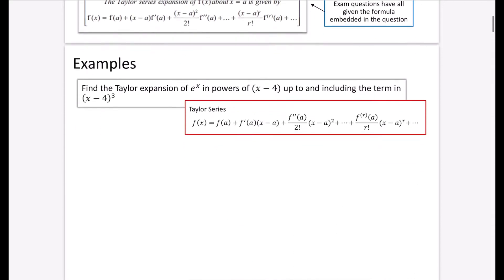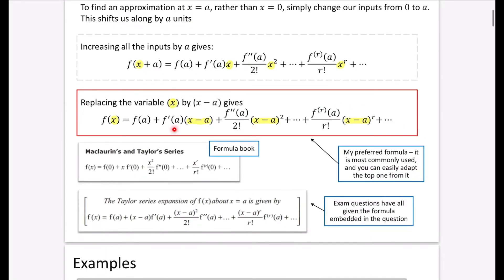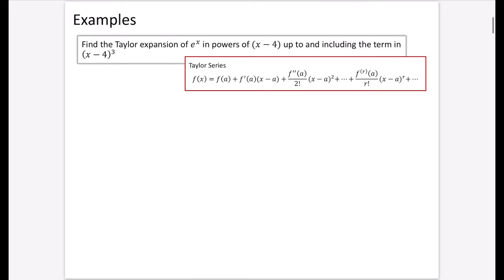Let's look at our first example, which produces the orange dotted graph from the first page. The question asks us to find the Taylor expansion of e to the x in powers of x minus four, up to and including the term in x minus four cubed. Because it says 'in powers of x minus four,' this uses the second formula. We differentiate repeatedly: f(x) = e^x, f'(x) = e^x, and so on, going up to the third derivative since we need the cubed term.